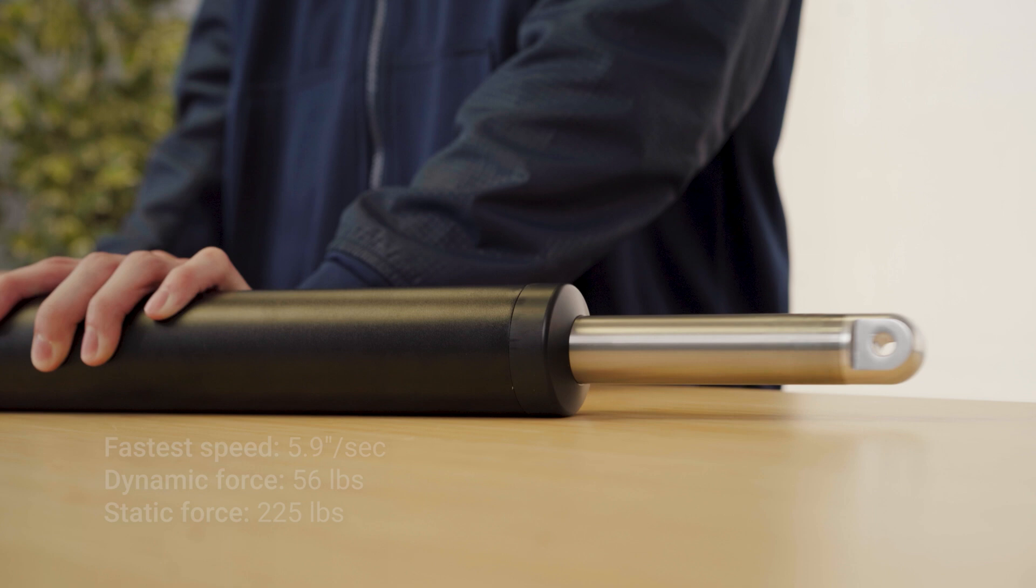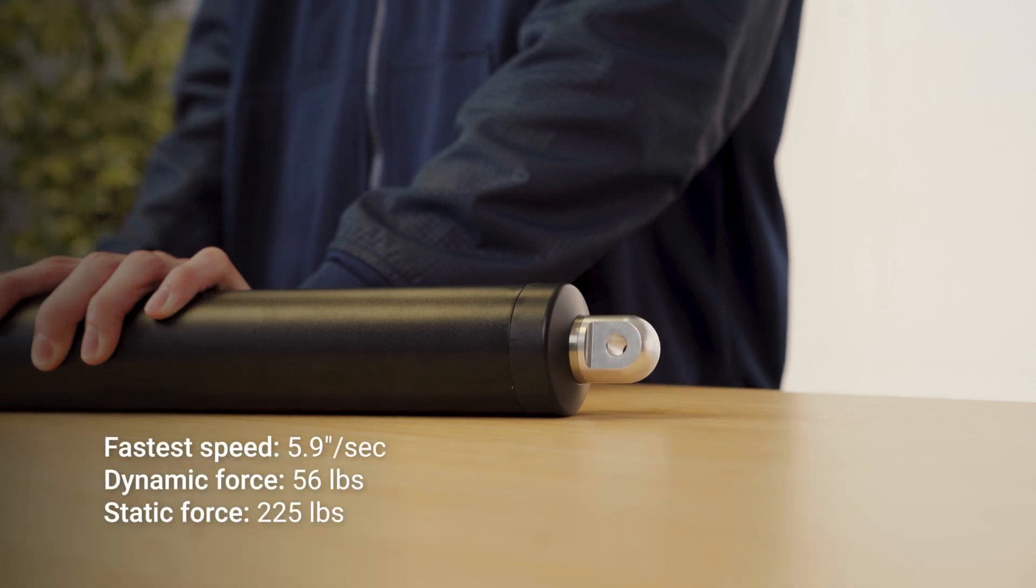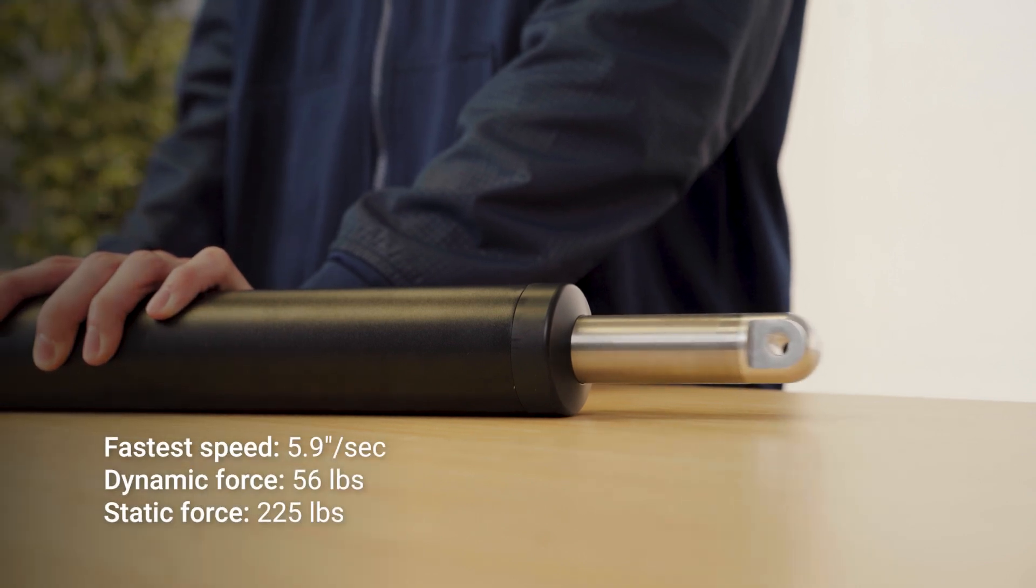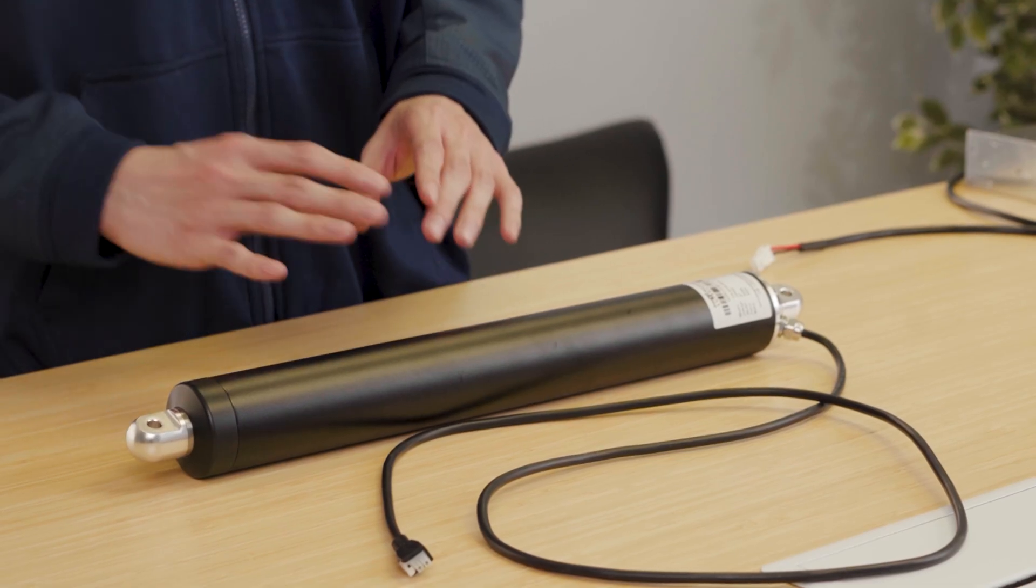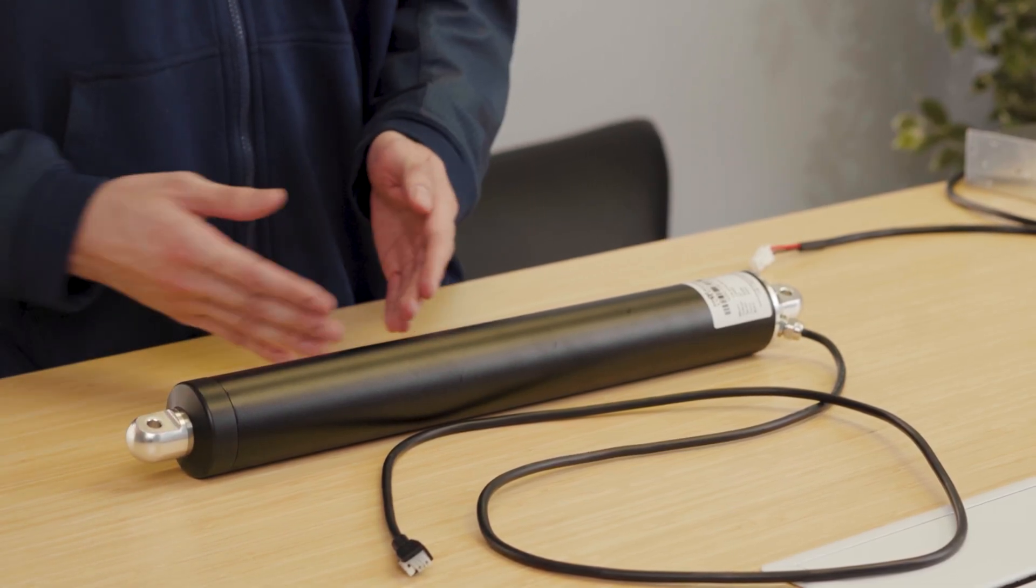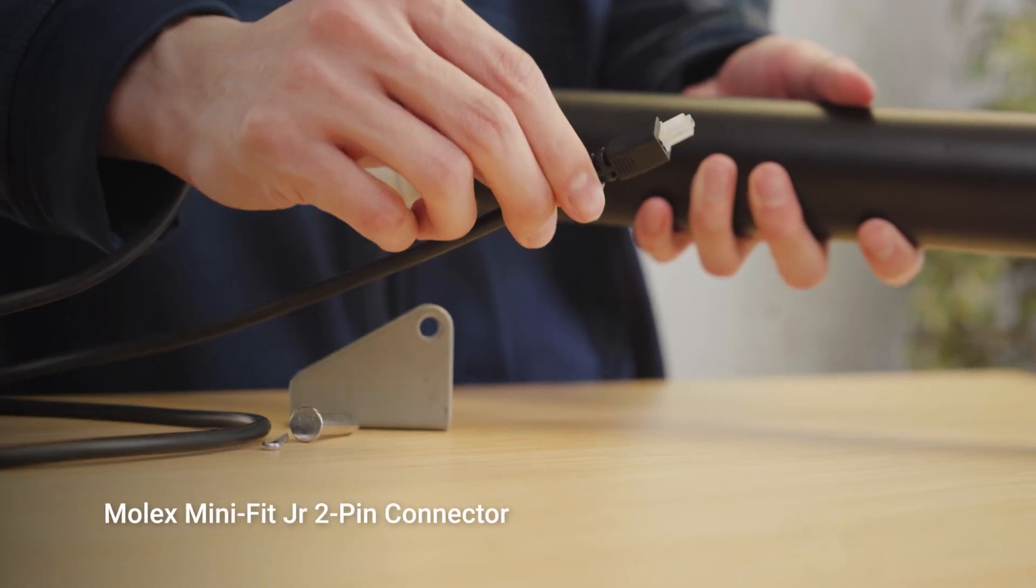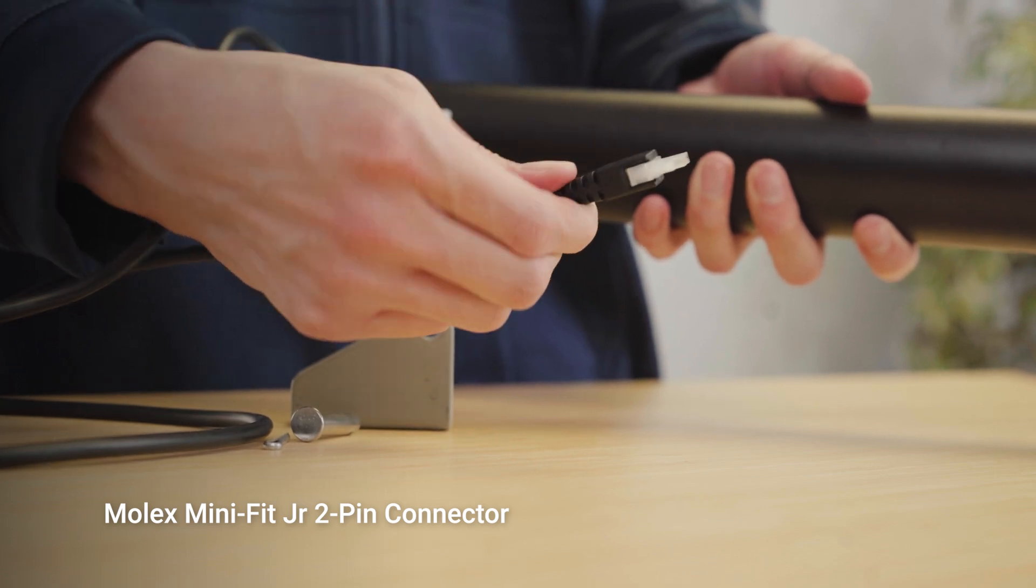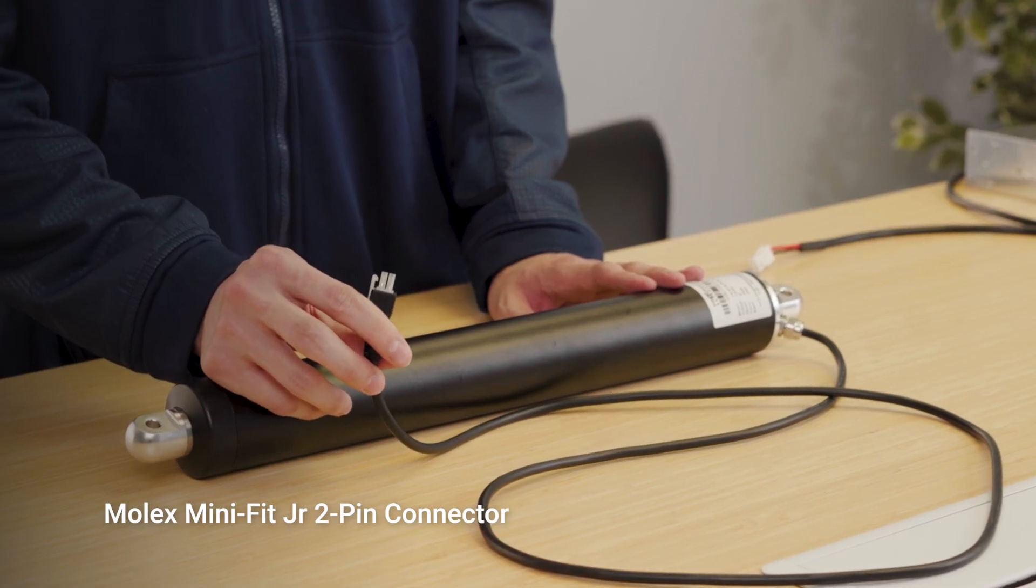The off-the-shelf options are available with ratings that can handle a dynamic force of 56 pounds and a static force of 225 pounds while traveling 5.9 inches per second unloaded. These actuators use a Molex Minifit Junior 2-pin connector for simple plug-and-play integration.